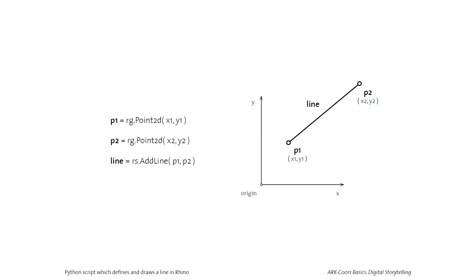This way of thinking also presupposes a coordinate system — coordinates only make sense if you have an origin, an x-axis, and a y-axis. You have to add some structure to the world, and if you do that, you're able to draw with algorithms or sets of operations. That's why in Rhino — and in all CAD programs — there's always an implied coordinate system, and this exists even on your screen, where every pixel has a coordinate.